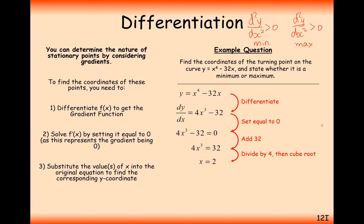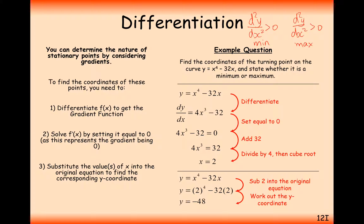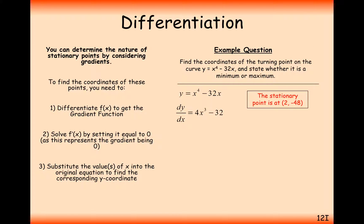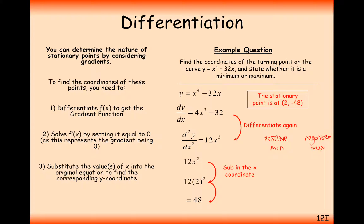So we have a turning point along our graph at x equals 2. The next thing we do is substitute this x value in to find the y-coordinate, giving us minus 48. So our stationary point is at (2, −48). Now let's look at whether it's a maximum or minimum — we differentiate again to get the second derivative, then plug x = 2 in. We get 48, which is positive, so we have a minimum turning point.